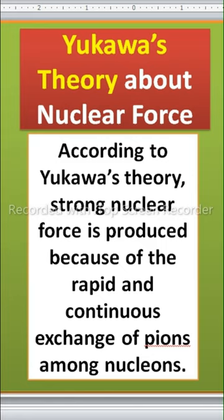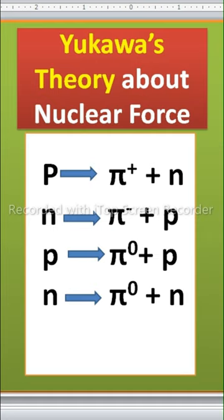Let's understand. There are three types of pions: positive pions, negative pions, and neutral pions. When the proton emits a positive pion, it converts to a neutron.